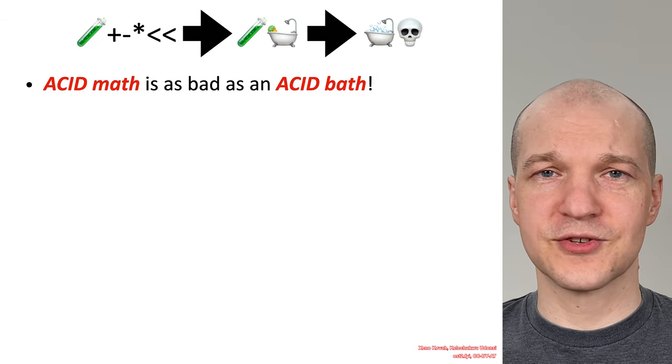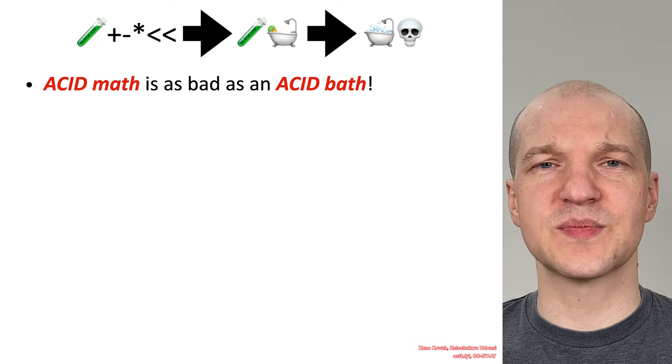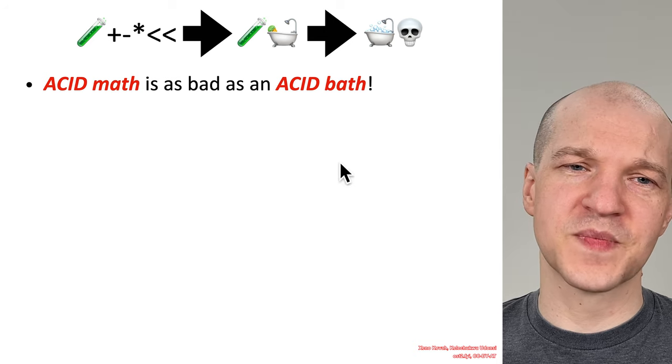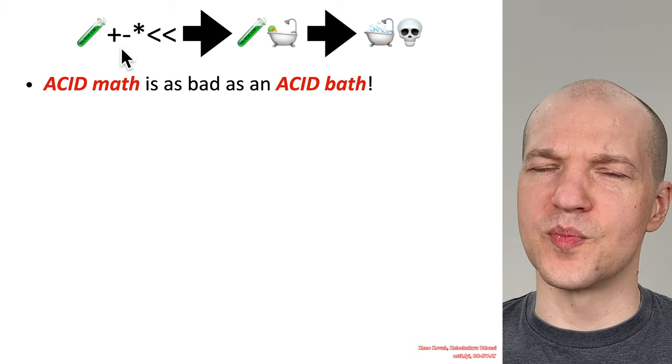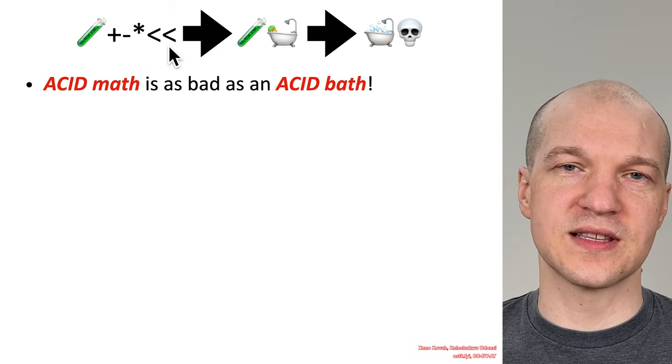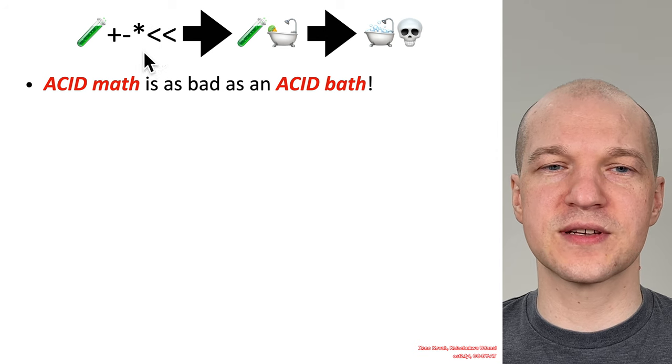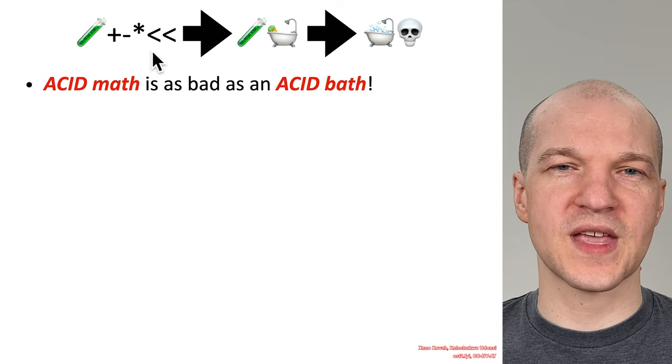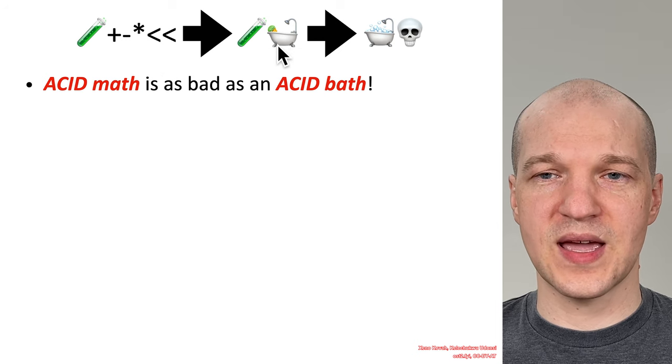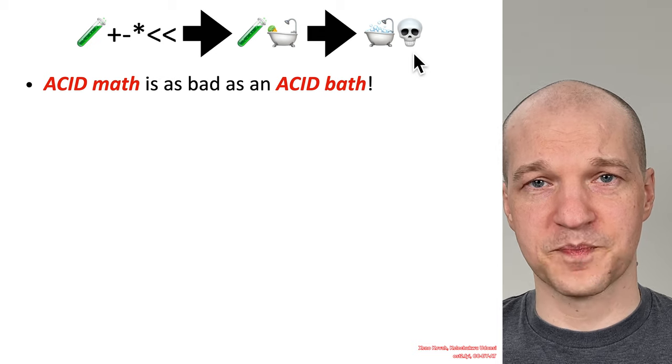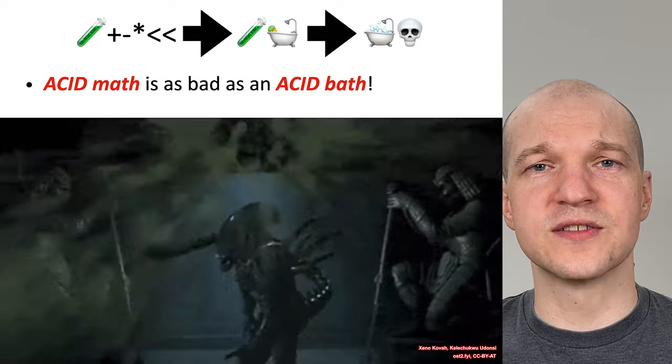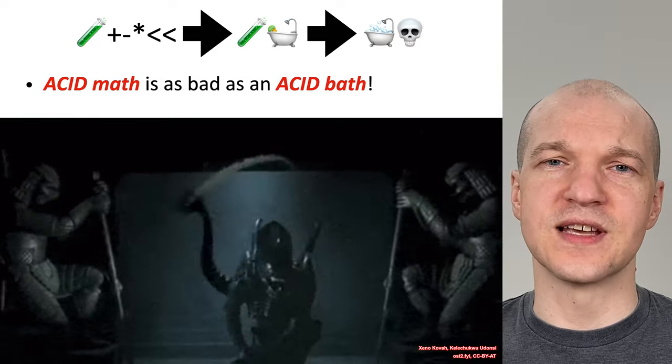So like I said, you're going to learn to fear acid math in this class, because acid math is as bad as an acid bath. So here we go, acid math, so addition, subtraction, multiplication, and shifting to the left, which is equivalent to multiplication, all those sort of arithmetic operations on acid lead to a bad time. Acid math, acid bath. And if that weren't enough, let us recall the tree veils of Alien vs. Predator to remind us that an acid bath is not a good time.